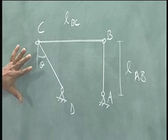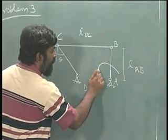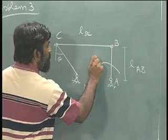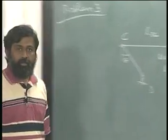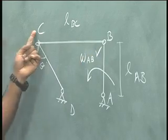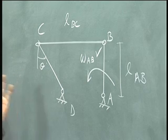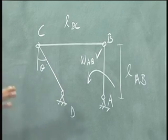Now given this kind of a problem, let's say I am given that the angular velocity of this is omega AB. Let's say I need to find out the angular velocity of BC and angular velocity of CD. That's the same problem. How will I go about doing it?